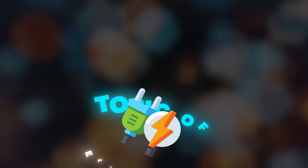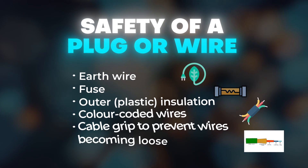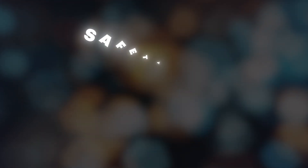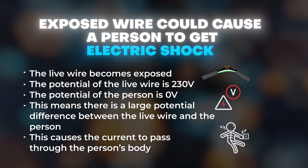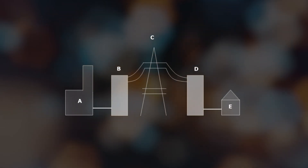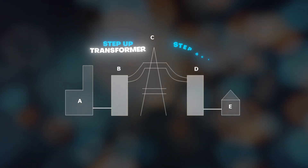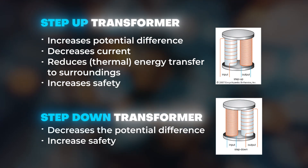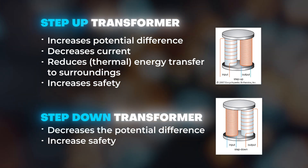In terms of direct questions that could come up in the topic of electricity and AC and DC, I think the safety of a plug or a wire could come up. If they ask you to name some features of a plug that make it safe, here are some points you can put down. If they ask you to explain why an exposed wire could cause a person to get an electric shock, here are some points for that as well. They could also give you a diagram and ask you to identify the step-up and step-down transformer — I have labeled them here. And if they ask you to explain the importance of step-up and step-down transformers in the national grid, here are some points that previous mark schemes have awarded marks for.